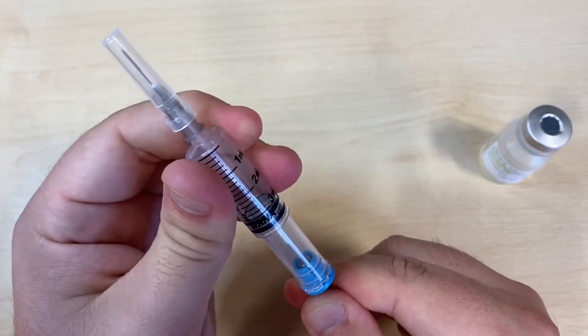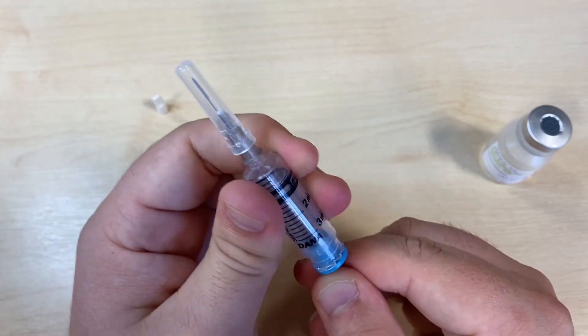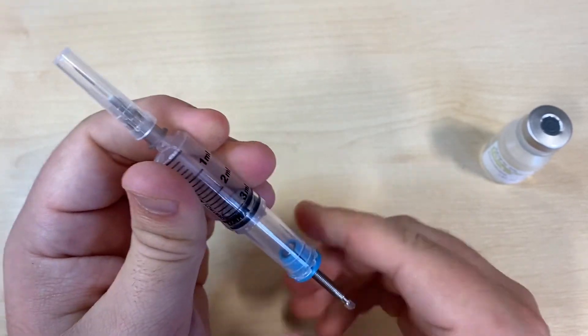Lubricate the inside of your syringe, pushing the plunger all the way to the top, and bringing it down all the way to the bottom a number of times.